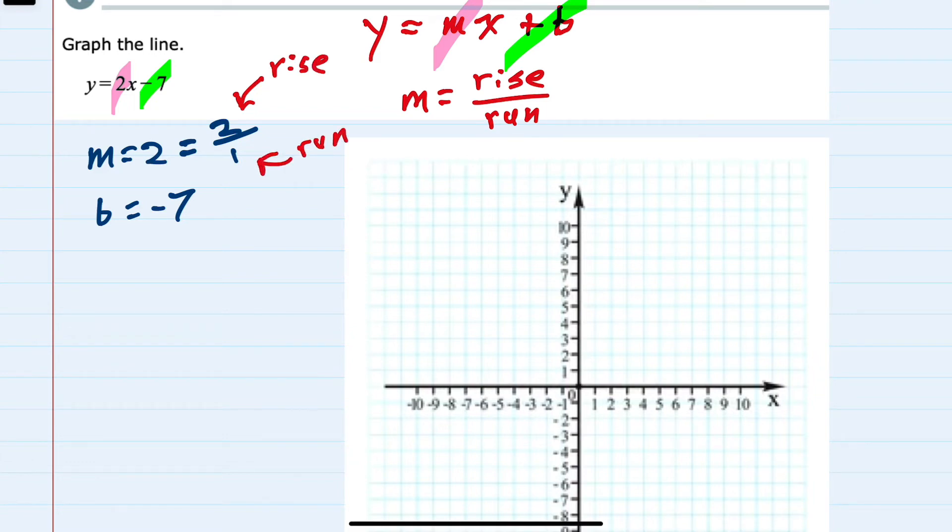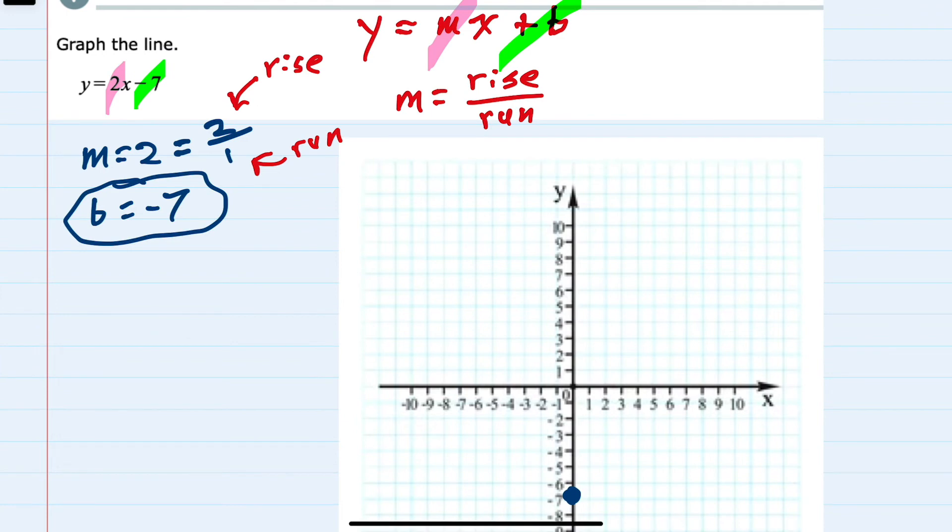So now to graph, we would start at the y-intercept. That is the value at which the line crosses the y-axis. So the y-axis is up and down. This line crosses at negative 7, so that's our starting point.